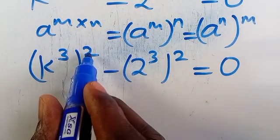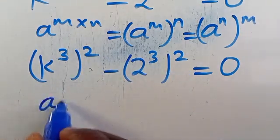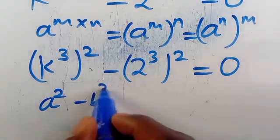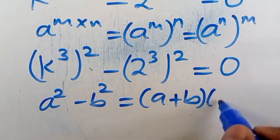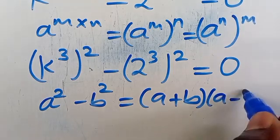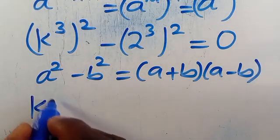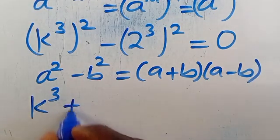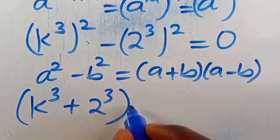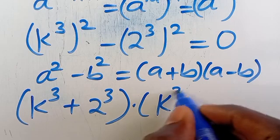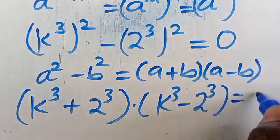Now recall this is a difference of two squares, because of the exponent 2 on each term. When we have a squared minus b squared, this equals a plus b in parenthesis multiplied by a minus b in parenthesis. So this becomes k to the power of 3 plus 2 to the power of 3, in parenthesis, multiplied by k to the power of 3 minus 2 to the power of 3, equals 0.